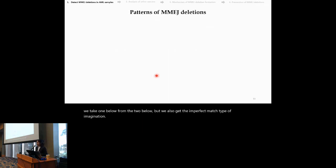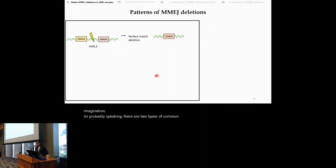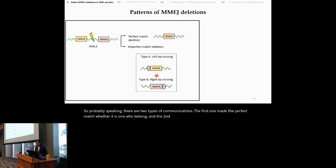So, broadly speaking, there are two types of MMG deletions. The first one being the perfect match, where you retain one homology, and the second one being the imperfect match, where there is one extra base missing from the left or right side of the homology.